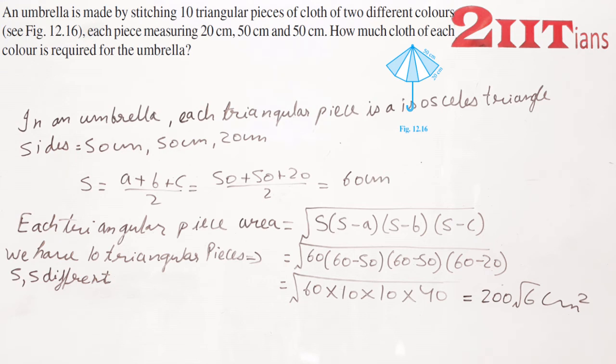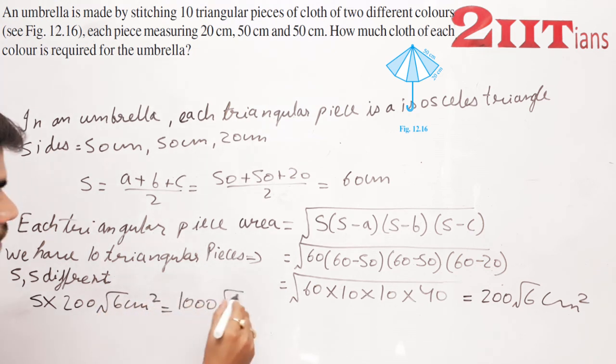तो 5 का area multiply करेंगे: 5 × 200√6 = 1000√6 cm² for each color. यह हमारा answer.